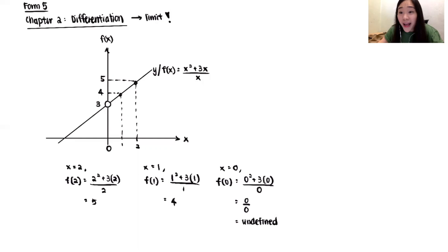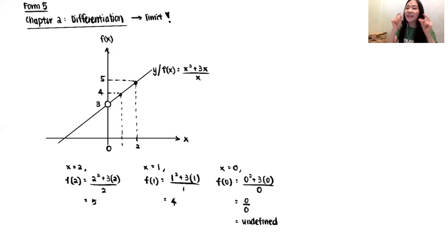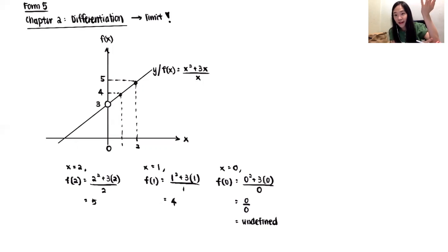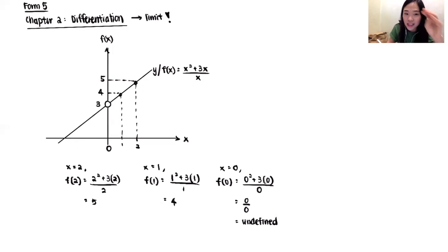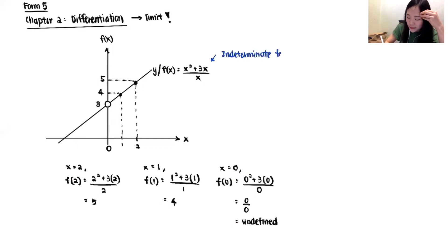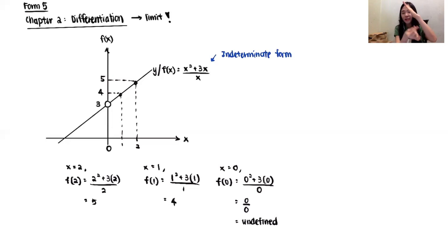So you must be thinking: teacher, why undefined? The graph already has a value there. Now I'm going to explain something you never knew. Normally a straight line is y = mx + c. But this equation is not y = mx + c. The moment I get undefined, this is actually an indeterminate form. You never knew about that, but normally a straight line - every single point is possible to find. But if there's one particular spot you cannot get the answer, we call it indeterminate form.